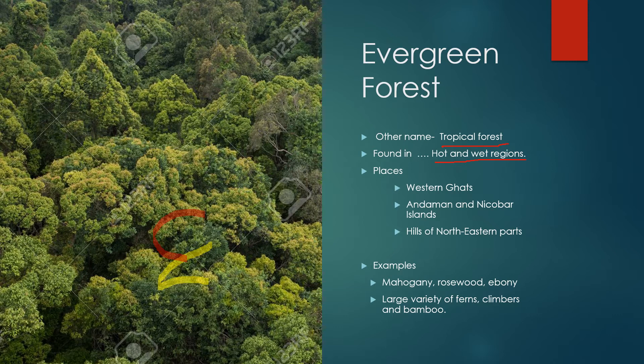In the Western Ghats, Andaman and Nicobar Islands, and the hills of the north-eastern part, the climate is hot and wet — and that's where we find evergreen forest. Examples of trees found in such forests include mahogany, rosewood, ebony, climbers, many varieties of bamboo, and large varieties of ferns.